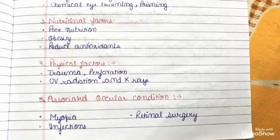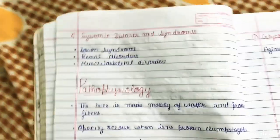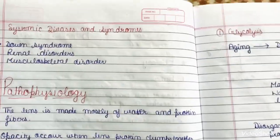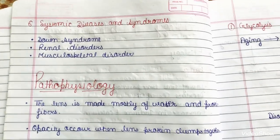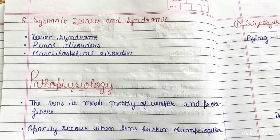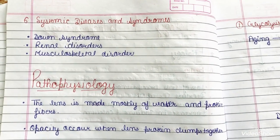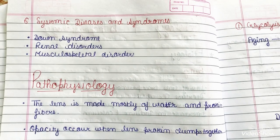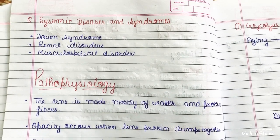Associated ocular conditions that can also be responsible include myopia, infections, and retinal surgery. Systemic diseases and syndromes include Down syndrome, renal diseases or disorders, and musculoskeletal disorders.